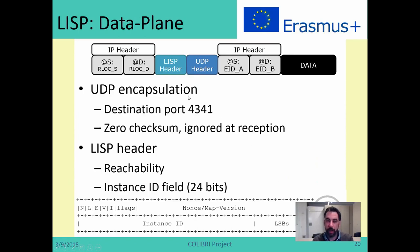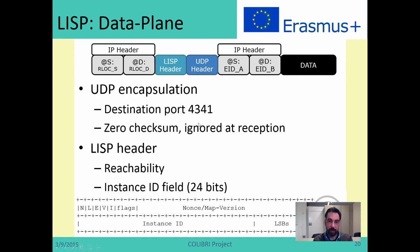Now, how does a LISP packet look like? LISP packets use UDP encapsulation, destination port 4341. Why UDP? Because it works very well with firewalls and it is a connectionless protocol. It also has a zero checksum, so you don't need to compute the UDP header checksum — because there are already many checksums on the IP headers and TCP headers to protect the packet. The LISP header contains metadata flags. It also contains something called the instance ID, which is a 24-bit field that can be used for isolating traffic or for virtual routers, VLANs, and similar applications.